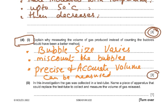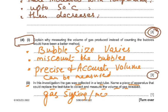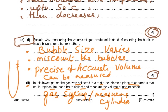Part d2: name a piece of apparatus that could replace the test tube to collect and measure the volume of gas released. You could use a gas syringe, a graduated test tube, or a measuring cylinder. These are laboratory apparatuses used to measure volume. A graduated test tube is a test tube with volume markings on it.